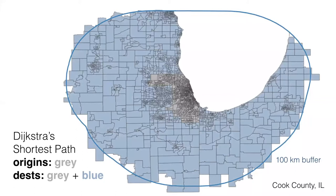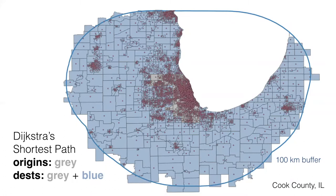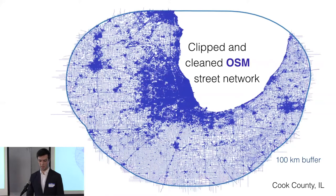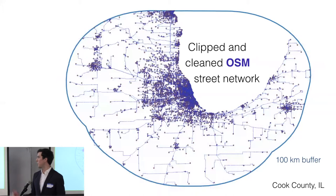We get all the centroids for those tracts, then route from every tract in the gray area to every tract in the gray and blue areas. This avoids the overlapping problem: we use counties as units of work without weird edge effects and get full coverage for the entire US. We clip the OSM network with the same buffer, snap origins and destinations to that street network, and route between them.